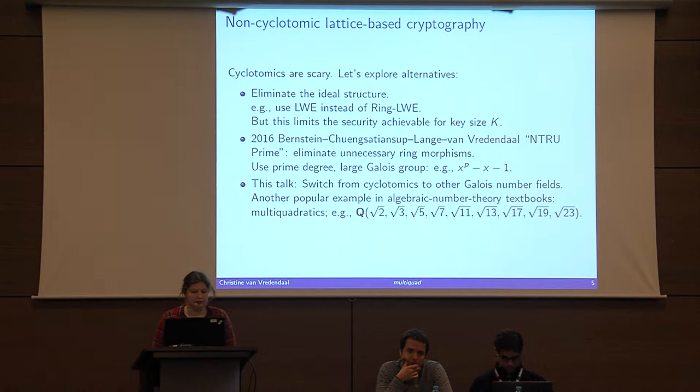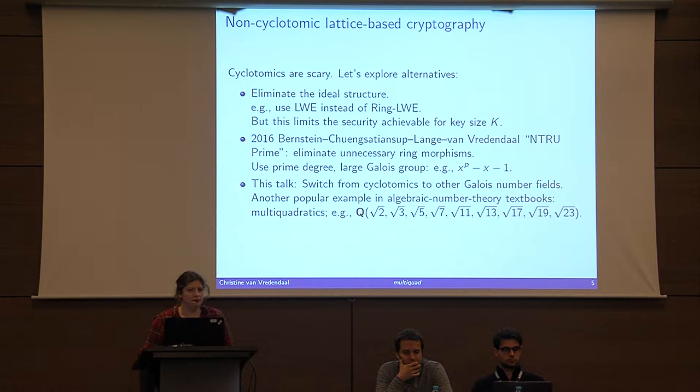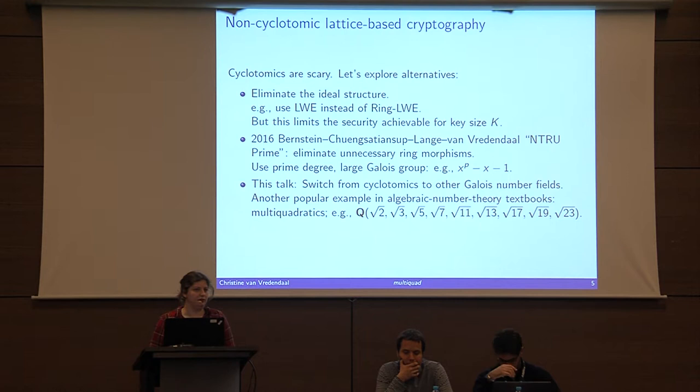In this talk we investigate a specific case of switching from cyclotomic fields to multi-quadratic number fields, which is a specific type of field seen a lot in textbooks because it's easy to analyze. There's a lot known about this, and it always looks like Q adjoined with some square roots of distinct primes.